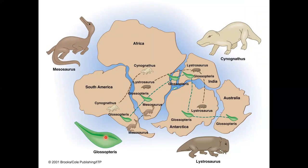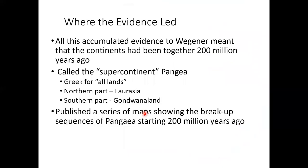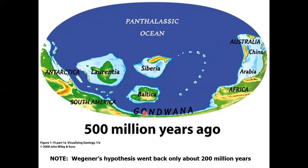The distribution of Glossopteris and Mesosaurus — Mesosaurus only in South America and Africa — along with the other lines of evidence led Wegener to propose that 200 million years ago all continents had been together in a supercontinent he called Pangaea, which is Greek for 'all lands.' There was a northern part called Laurasia and a southern part called Gondwanaland. He published a series of maps showing the breakup sequences of Pangaea starting about 200 million years ago.